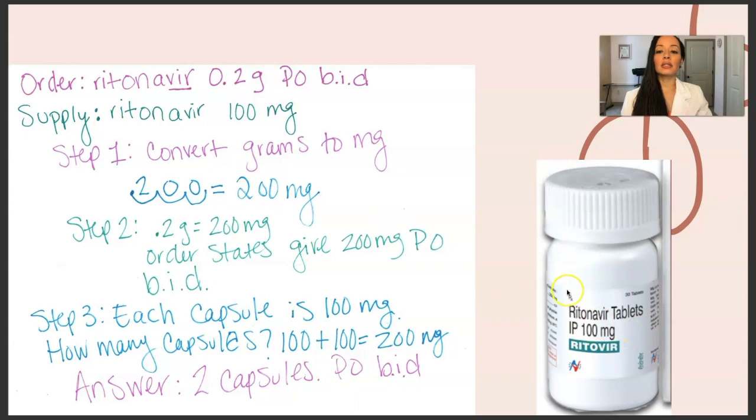So, ritonavir is an antiviral. The ending, just a little tip, pharmacology tip. If you're ever trying to learn pharm, then memorize endings of the generic names, and VIR a lot of times will be an antiviral. So you know it's an antiviral of some sort. You're just not sure, but this is for HIV. So ritonavir, the order always starts with O and S. What's the order? And the order is 0.2 grams orally two times a day. The supply, it comes in 100 milligram tabs. So the supply is ritonavir, 100 milligrams.